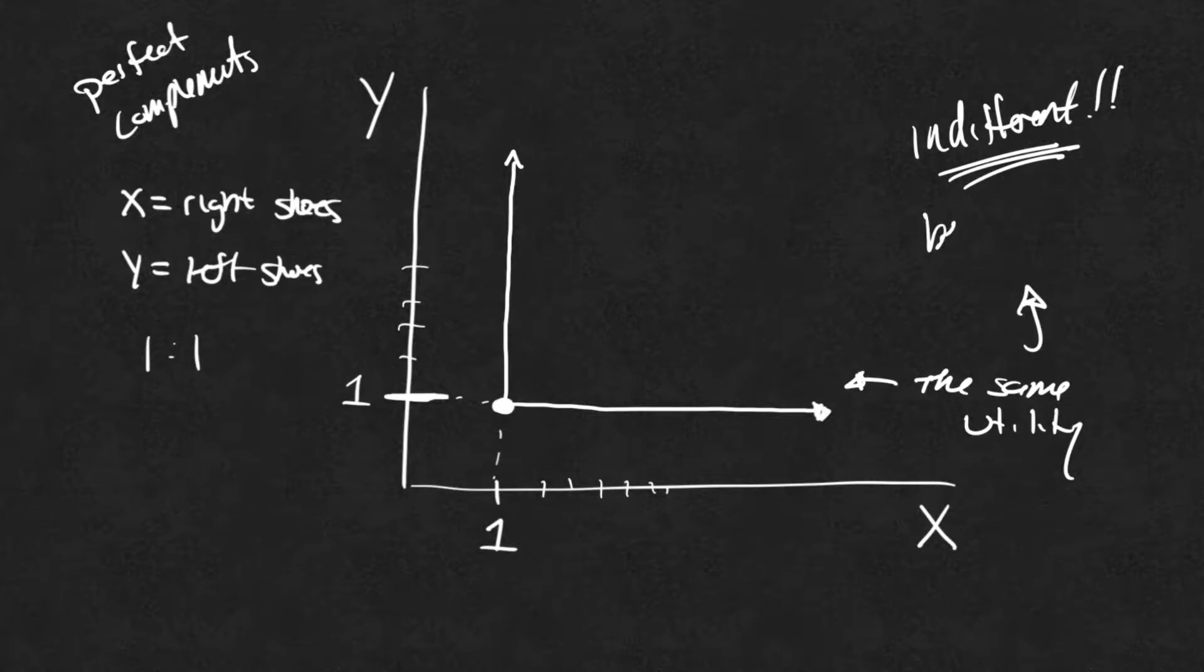Boom, there's my indifference curve. I'm indifferent between all of these combos, these combinations. This point right here, this point right here, this point right here. All of those I am indifferent to. That's why we call it an indifference curve. It gives us the same utility.